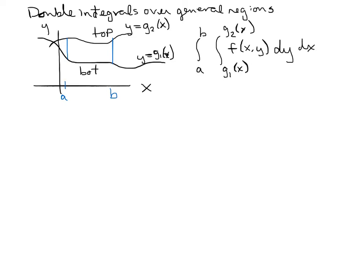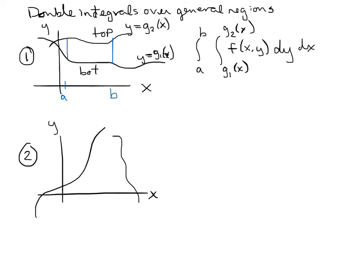The other thing that could happen is that instead of having a top and bottom function, we might have a right and left function. Here's a function on the right and one on the left. These are x equals functions. The one on the right, let's call it h₂, is a function of y — it's the rightmost, described along the x-axis. The one on the left, let's call it h₁, is also a function of y.